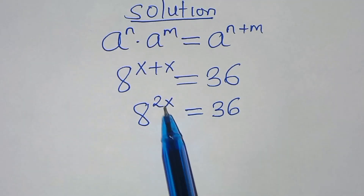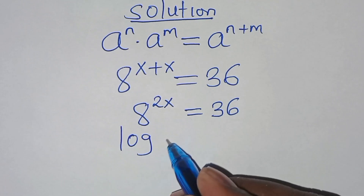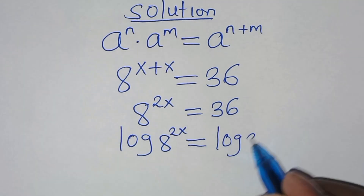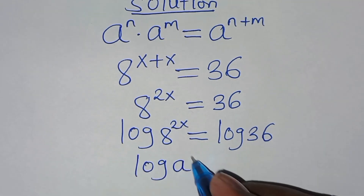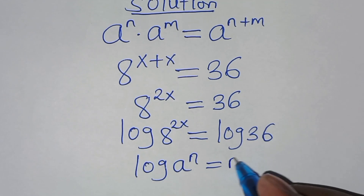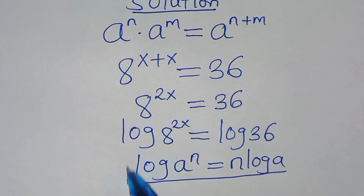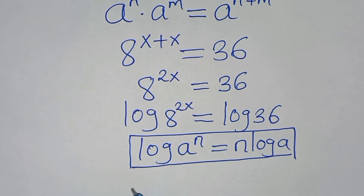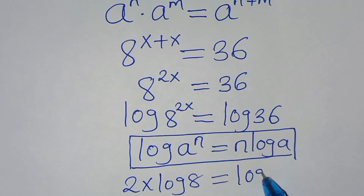To solve for x, we introduce logarithm on both sides, so we have log of 8 to the power 2x equals log 36. Now, log 8 to the power 2x is in the form of log a^n, which we can transform as n·log a. Applying this power rule property, log 8^(2x) becomes 2x·log 8, and this equals log 36.